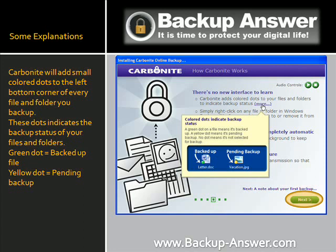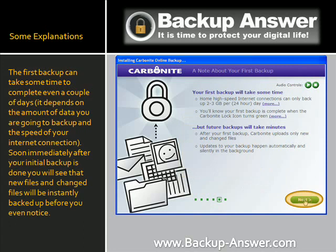It is really a great feature. A green dot means the file is backed up. A yellow dot means the file is pending backup. The first backup can take some time to complete — even a couple of days. It depends on the amount of data you are going to backup and the speed of your internet connection. Soon after your initial backup is done, new and changed files will be instantly backed up, even before you can notice.